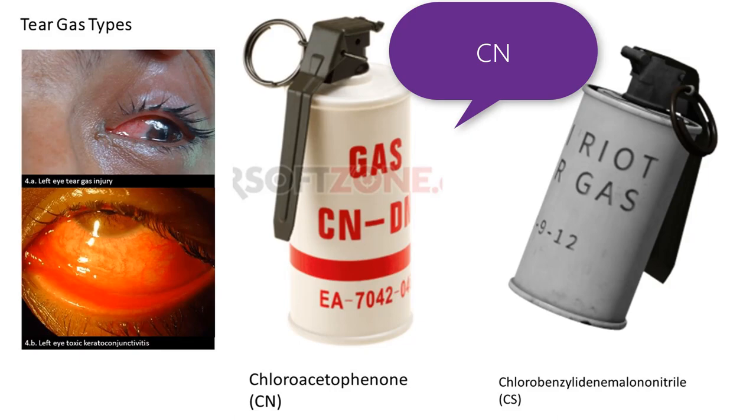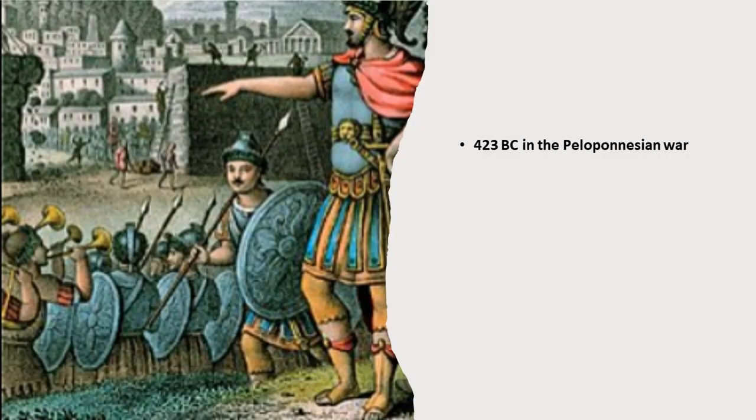There are two main types of tear gas: CS and CN. Other than these two types, there are many types of tear gases that have been used since 400 BC. These types of agents are called crowd controlling agents — that is the technical term. These are chemicals, and sometimes natural materials like paper dust.